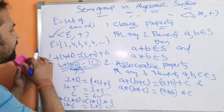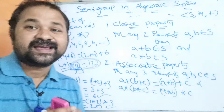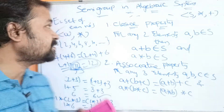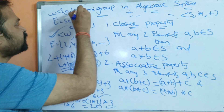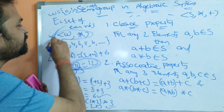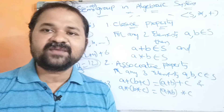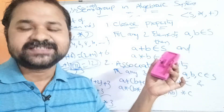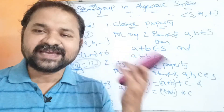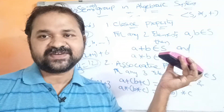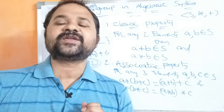Likewise, we can solve any problem. Let we have a set called W, star, where W means the set of whole numbers — 0, 1, 2, 3, and so on to infinity. We have to check whether W, star is a semi-group or not. For that, we take two elements from the set and check closure property, then take three elements and check associative property. This is about semi-group in algebraic systems.